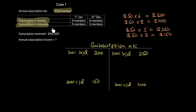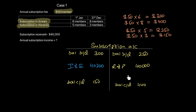We also know that subscription received is $40,000, which is your receipt figure or bank figure. The receipt and payment figure of $40,000 goes on the credit side of the subscription account. Once you have all these figures, you can calculate the missing figure — the income and expenditure value — which comes out to be $40,200. Total up the credit side first, then subtract from the debit side to arrive at this figure.